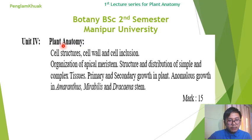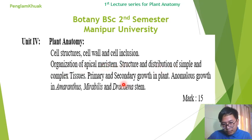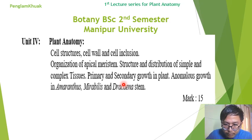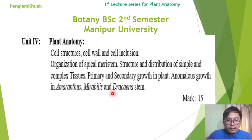Under Plant Anatomy we will discuss cell structure, cell wall and cell inclusion, organization of apical meristem, structure and distribution of simple and complex tissue, primary and secondary growth in plants, anomalous growth in Amaranthus, Mirabilis and Dracaena stem. This unit will carry 15 marks.